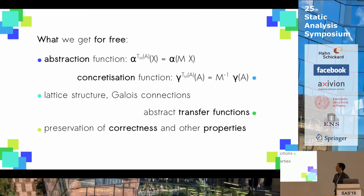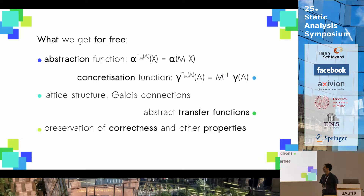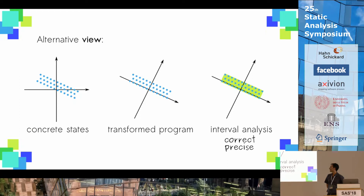This has a number of positive implications, because we gain for free something about our new domain. If the original domain has an abstraction function, usually denoted by alpha, then we get a new abstraction function for our new domain. The same applies for our concretization function, and we also preserve any lattice structure, Galois connection, insertion, and so on. We also get a new version for the abstract transfer functions, and we preserve correctness and other properties of interest.